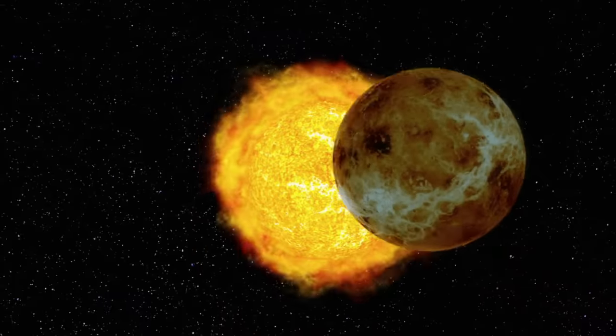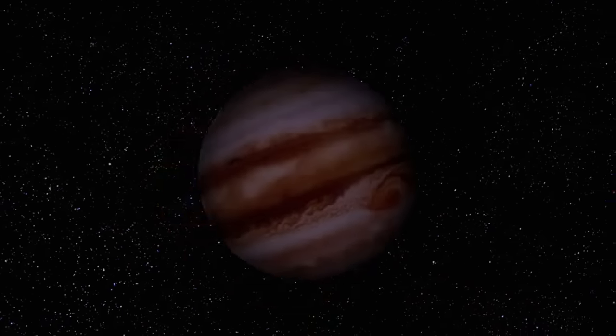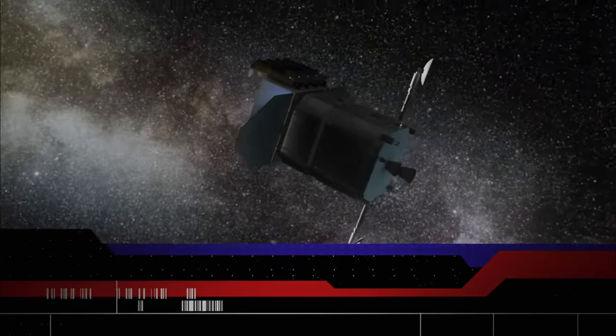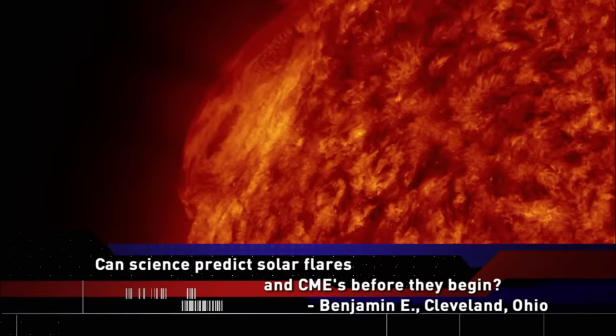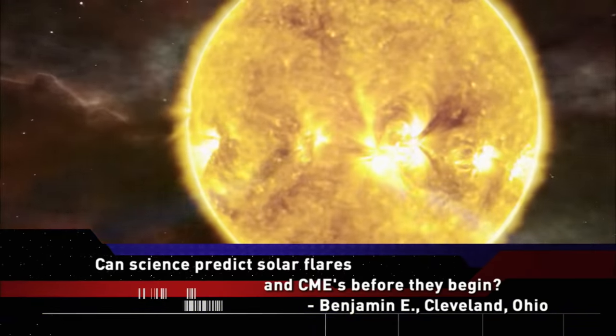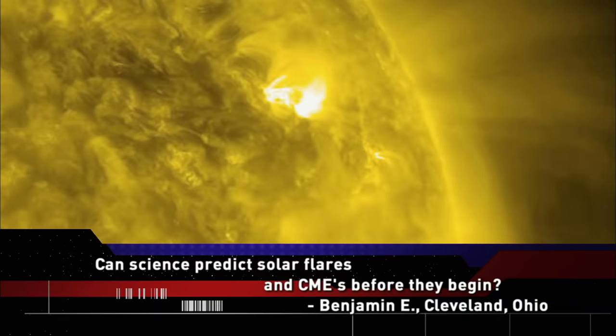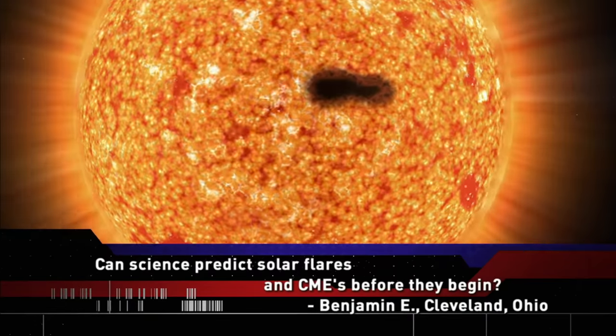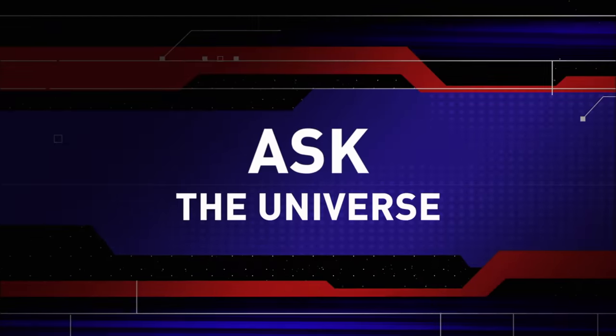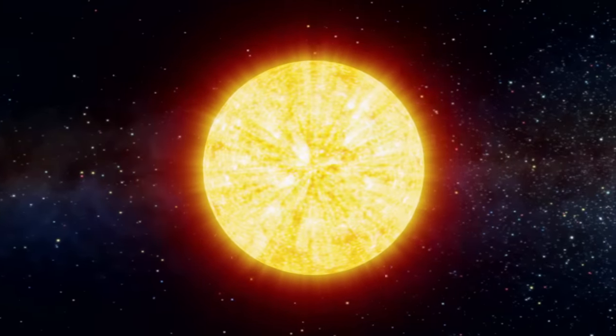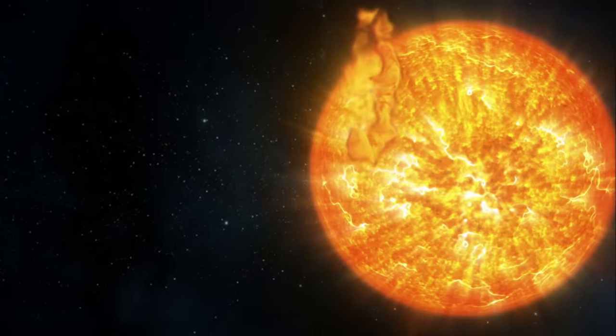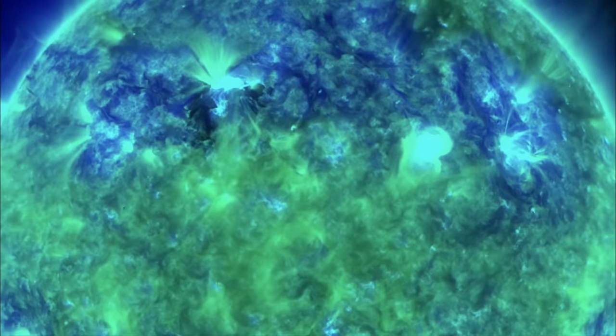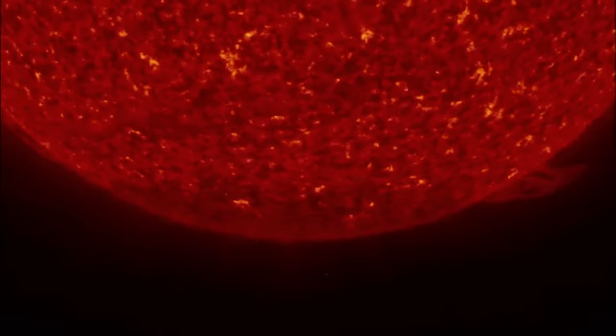Are there regular patterns to space weather? That's exactly what Benjamin E. from Cleveland, Ohio, wanted to ask the universe. Benjamin emailed us. Can science predict solar flares and CMEs before they begin? Interesting question, Benjamin. We'd love to be able to predict exactly when giant coronal mass ejections occur. It turns out that roughly every 11 years, there's a maximum in the number of sunspots, coronal mass ejections, solar flares, and associated activity. We can predict roughly when that'll occur. However, we can't predict when any particular sunspot group or coronal mass ejection will occur. By far, the most powerful examples of space weather are coronal mass ejections. They are connected to the solar cycle, peaking during solar maximum, with as many as two or three per day.